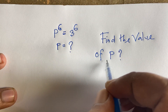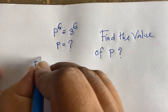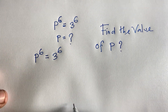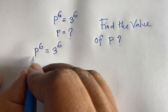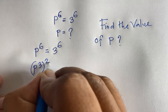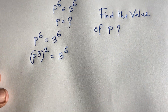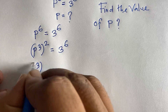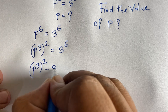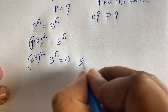So how to solve this fully? The equation is p to the power 6 equals 3 to the power 6. We rewrite p to the power 6 as (p³)² and 3 to the power 6 as (3³)². Moving the right side over, we get (p³)² minus (3³)² equals 0.